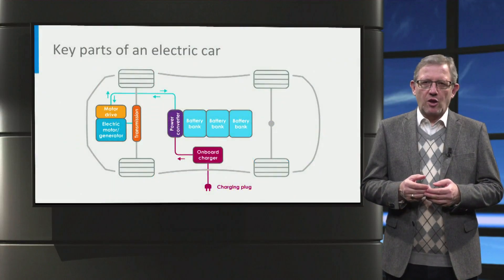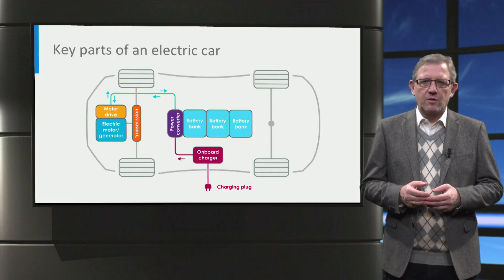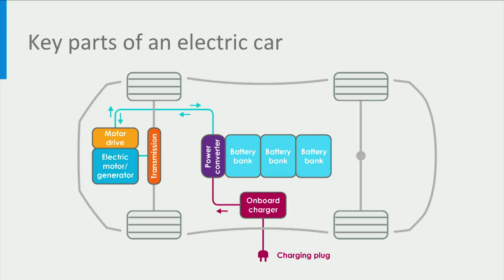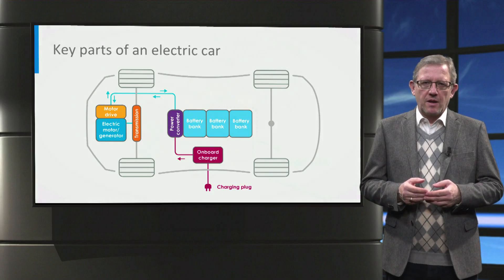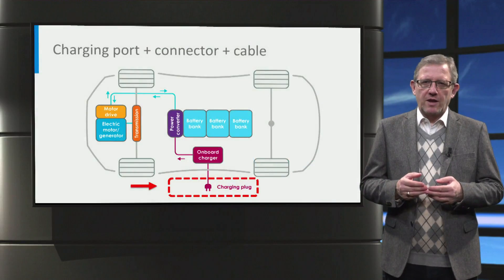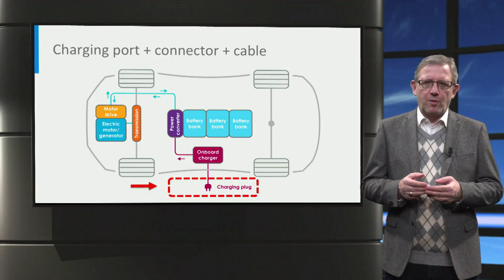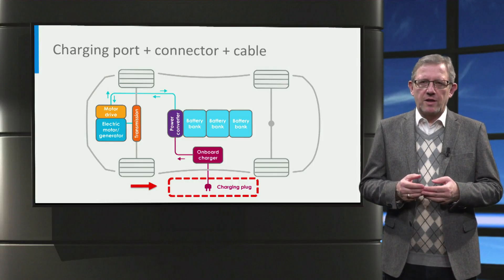The schematic shows how the different components are connected to each other in the electric car. To explain what is inside an electric car, let us follow the power flow direction and identify the key components. The first part we look at is the charging port with charging connector and cable. The charging port together with the connector and cable allows the electric car to connect to an external power supply in order to charge the traction battery pack. The charging port is often referred to as a vehicle inlet.